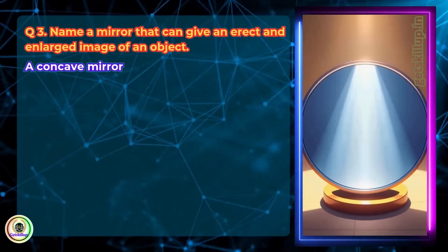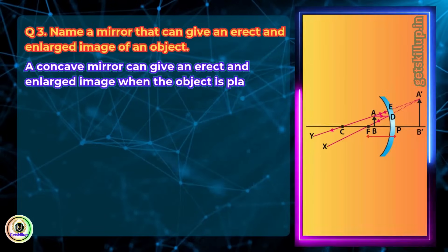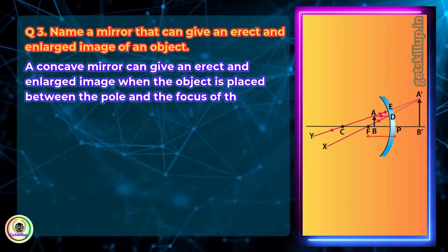A concave mirror can give an erect and enlarged image when the object is placed between the pole and the focus of the mirror.